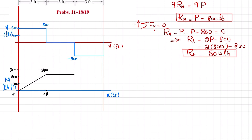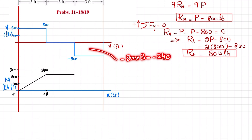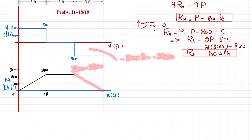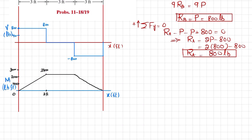For the final portion, the area under the shear force diagram is minus 800 times 3 = minus 2400. Adding this to the existing 2400 brings the moment back to zero, giving a straight descending line. The completed bending moment diagram shows a trapezoidal shape peaking at 2400 pound-feet.